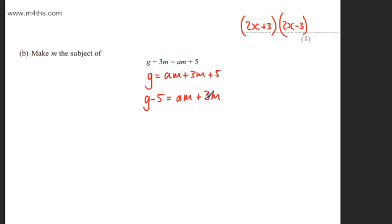On the right-hand side, I'm going to factor the M out. So I have G minus 5 is equal to M, and then we're going to have A plus 3.